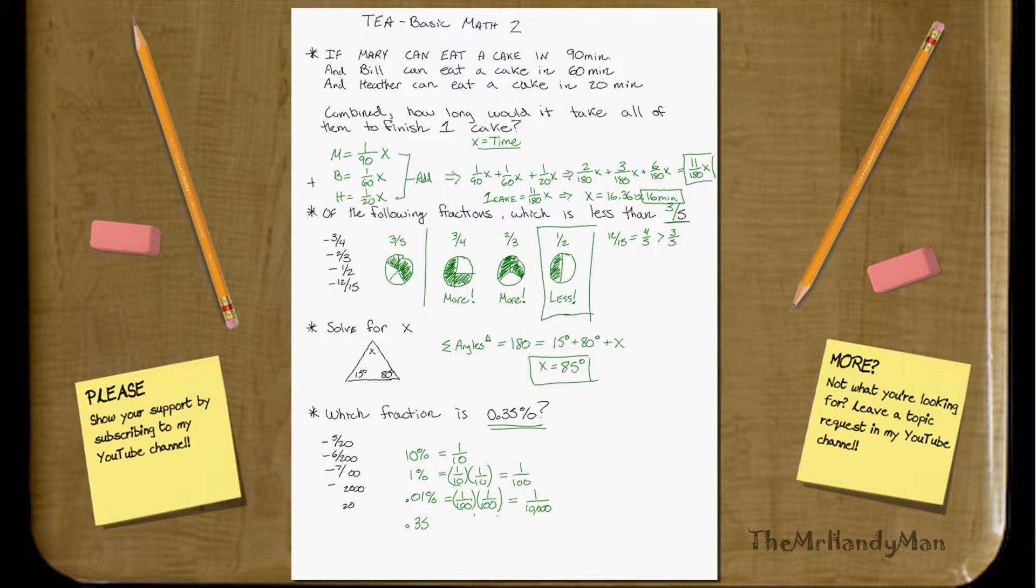Well, to get 0.35%, you have to multiply 0.01% by 35. So what you're going to get is 1 over 10,000 multiplied by 35, which is actually, you can just replace the 1 with 35, right?